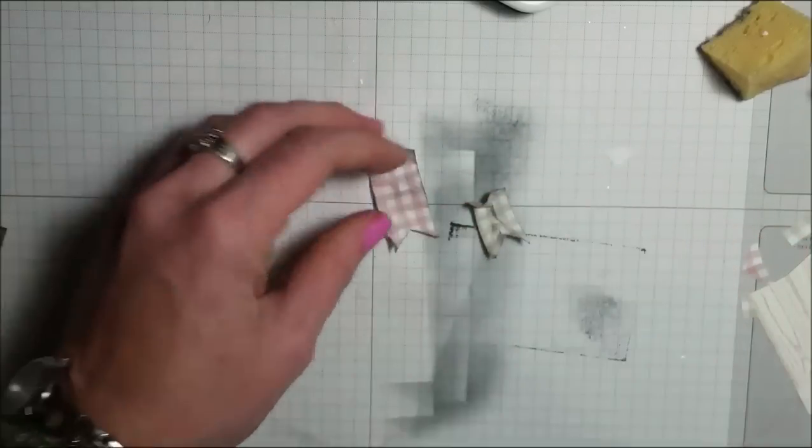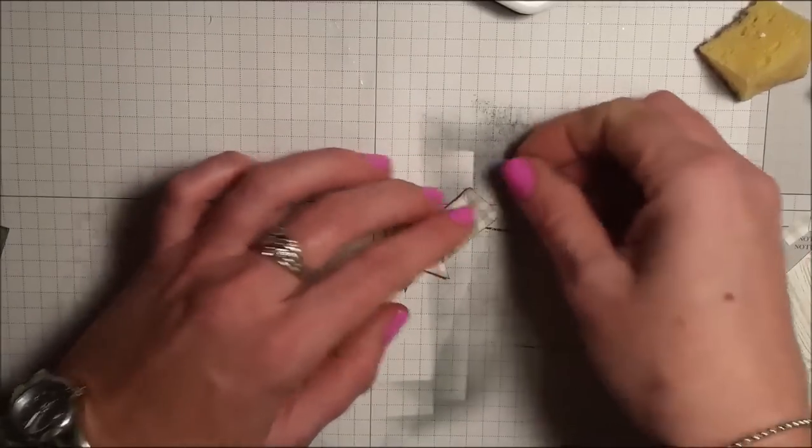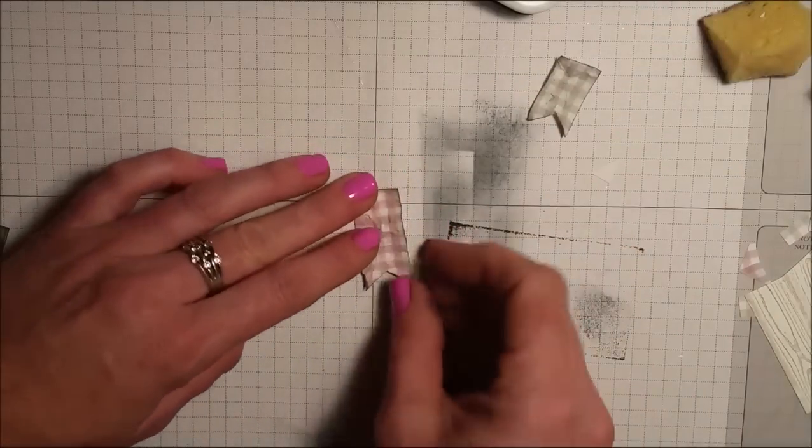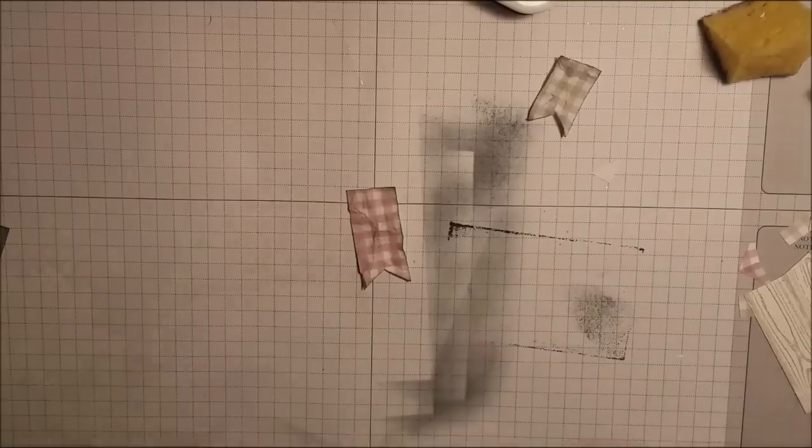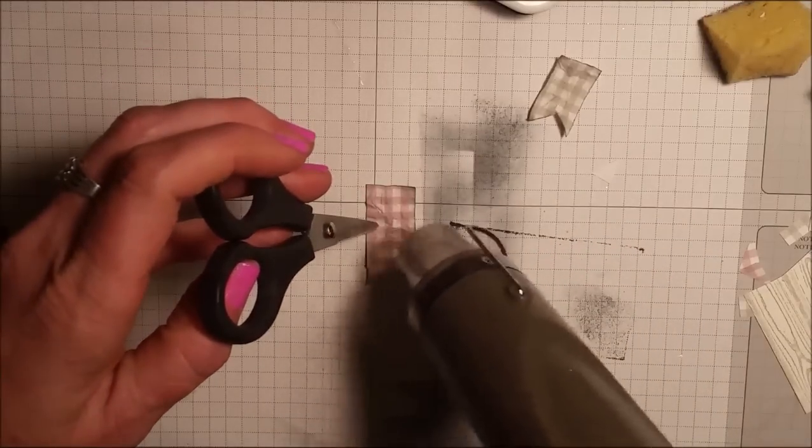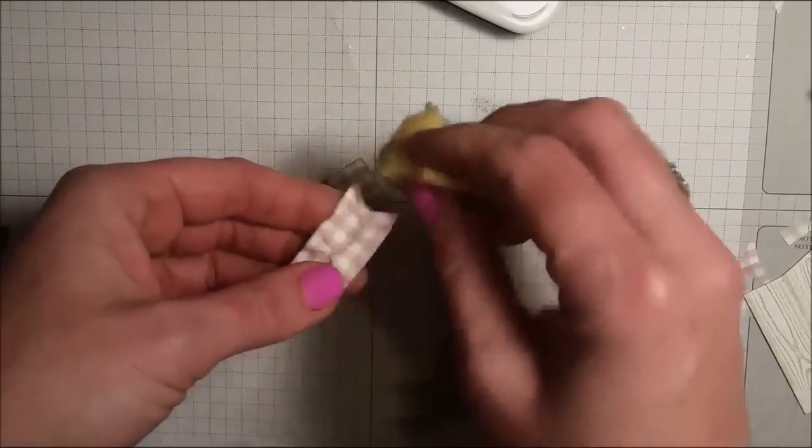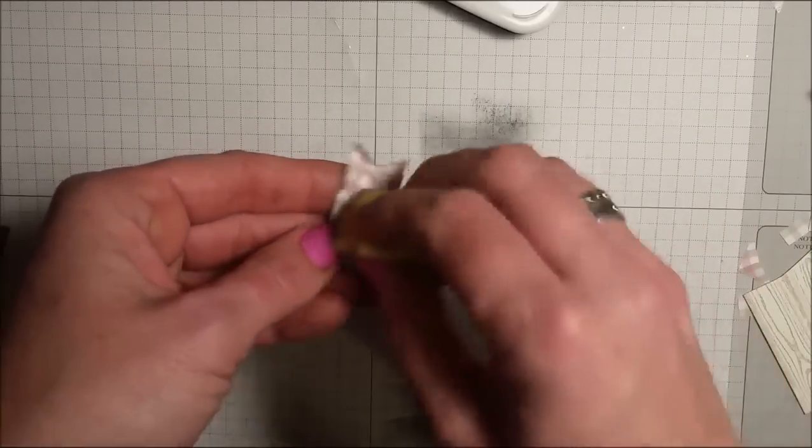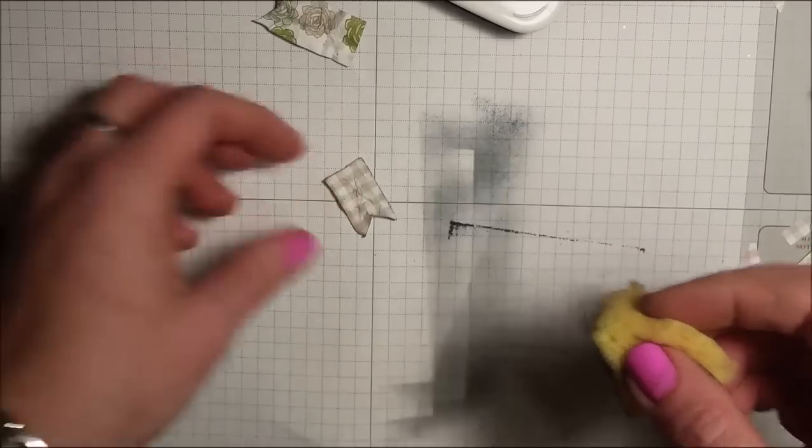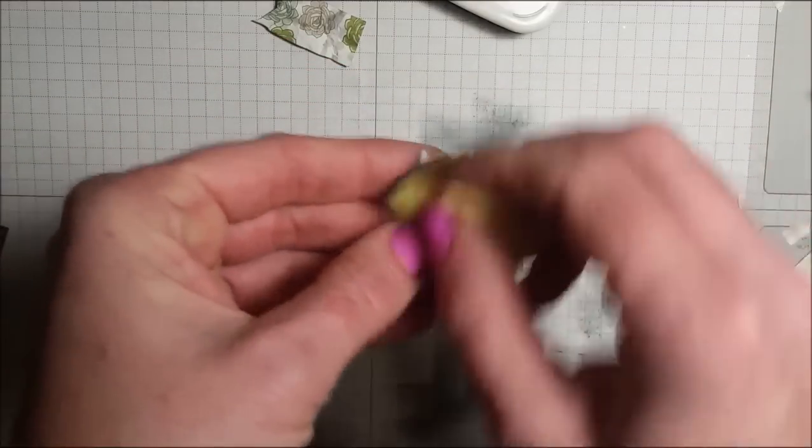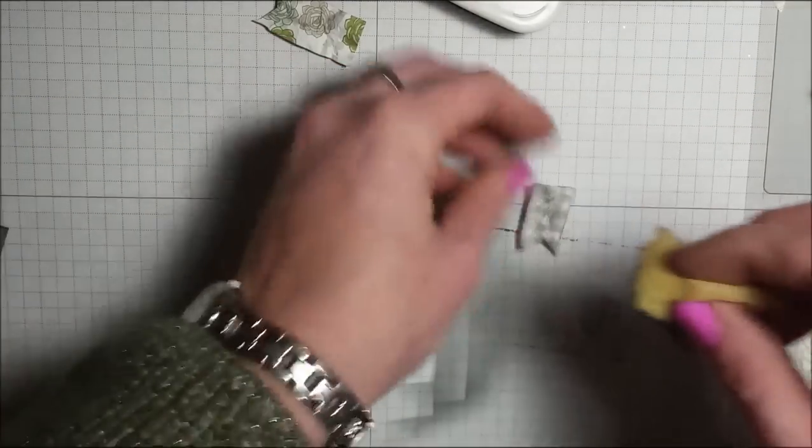Okay, now those need to be dried. And I'm going to use the heat tool to dry them. Okay, now that they're dry, I'm going to take my sponge with the black ink on it and lightly sponge on top so that those creases kind of stand out a bit more.